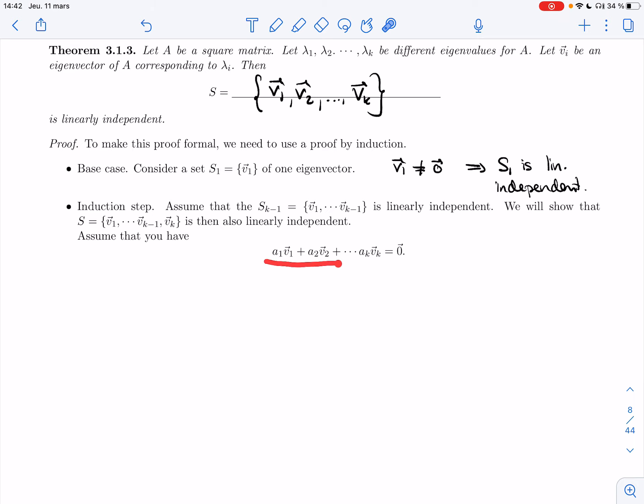Alright, so assume that I have a dependence relation for S. What I'm going to do is I'm going to apply A to this. So if I multiply this by A, I'm going to get A times zero. I'm going to still get zero.